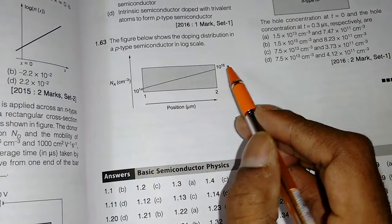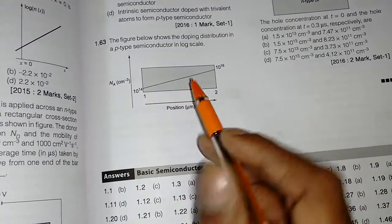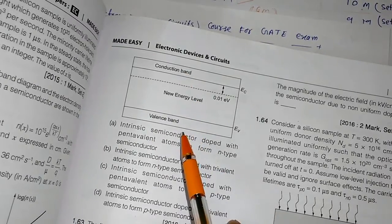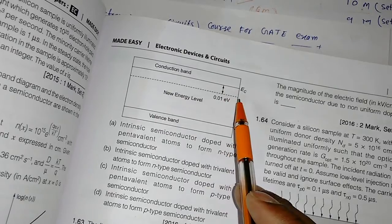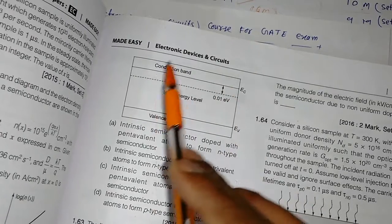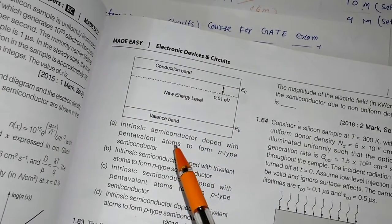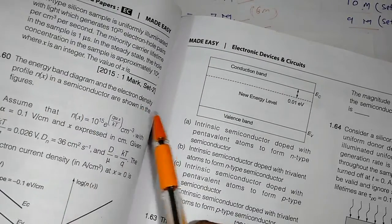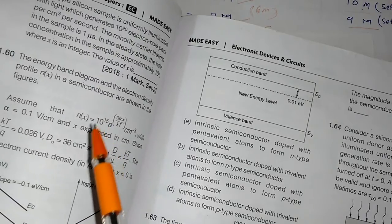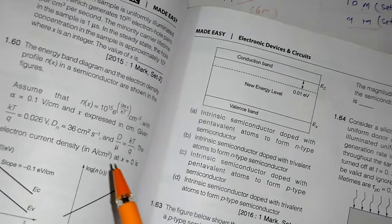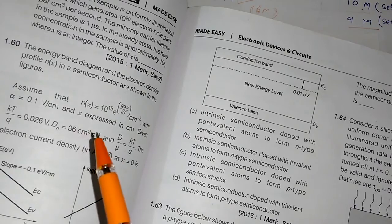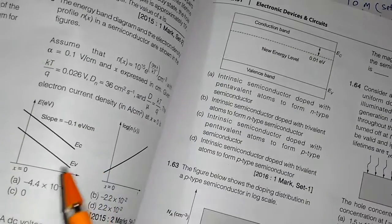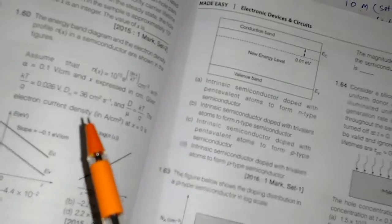This is the energy band concept - conduction band is there, valence band is there, so there is an energy donor level. What is the type of semiconductor or what impurities we need to add? Similarly, this concept is the energy band diagram and electron density profile is given. We need to find the electron current density, that is J equals Q into Dn into dn by dx. Some formulas we have to use.